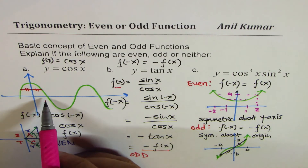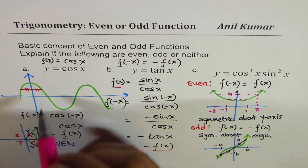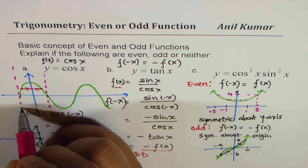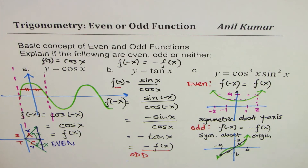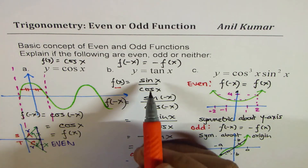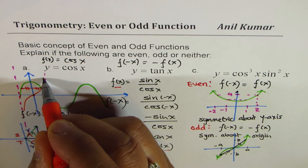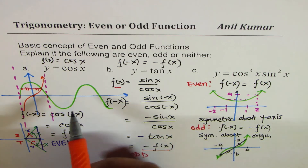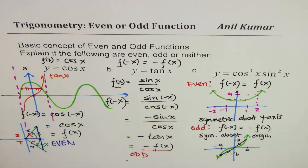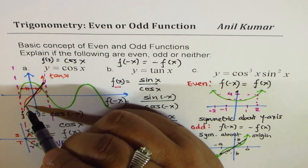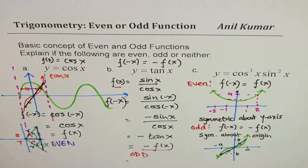If you sketch y = tan x — with the zeros of cos x becoming vertical asymptotes — the graph is symmetric about the origin. You can easily see that the graph is indeed symmetric about the origin, confirming that tan x is an odd function.